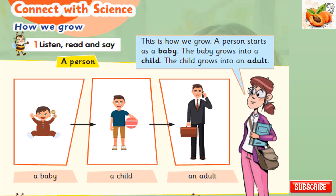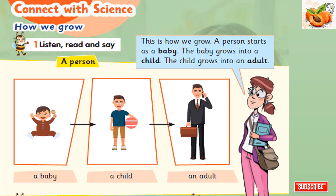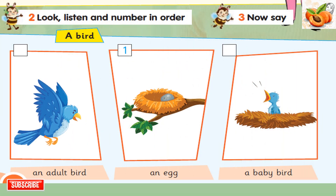Listen, read, and say. This is how we grow. A person starts as a baby. The baby grows into a child. The child grows into an adult. A baby. A child. An adult. Look, listen, and number in order: One - an egg. Two - a baby bird. Three - an adult bird.